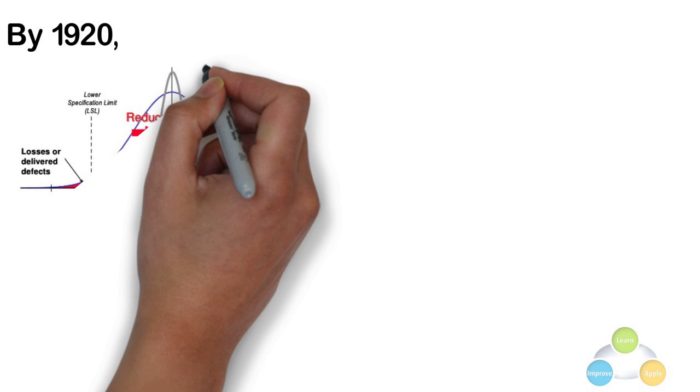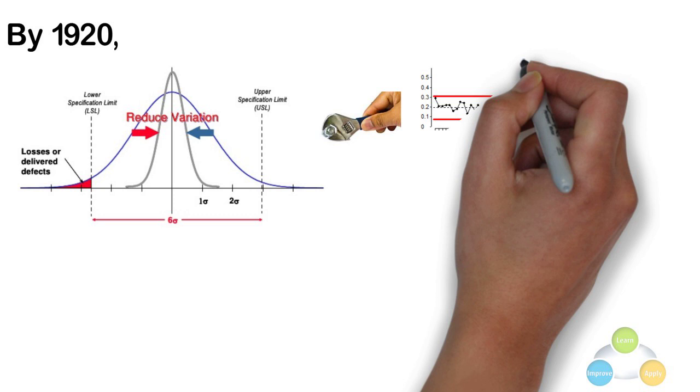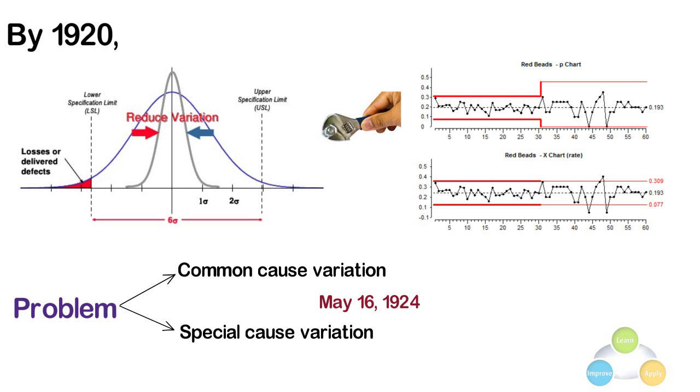Moreover, they had realized that continual process adjustment in reaction to the non-conformance actually increased variation and degraded the quality. Shewhart framed the problem in terms of common and special cause of variation on May 16, 1924. He wrote an internal memo introducing the control chart as a tool for distinguishing between the two.